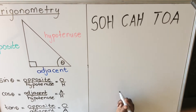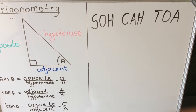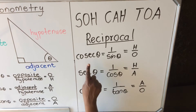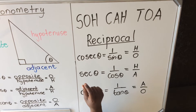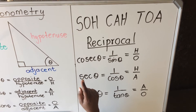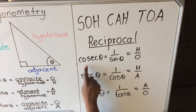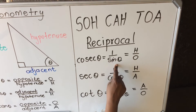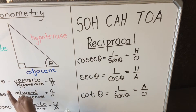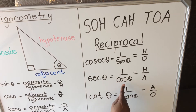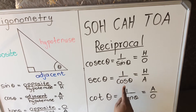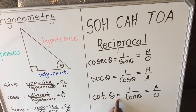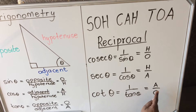The trig ratios also have reciprocals. A reciprocal is an inverse — like the inverse of 2 is 1 over 2. There are three reciprocal trig ratios: cosec theta is the inverse of sine theta, so it equals hypotenuse over opposite. Sec theta is the inverse of cos theta, so it equals hypotenuse over adjacent. Cot theta is the inverse of tan theta, so it equals adjacent over opposite.